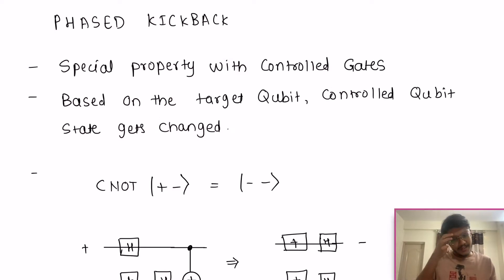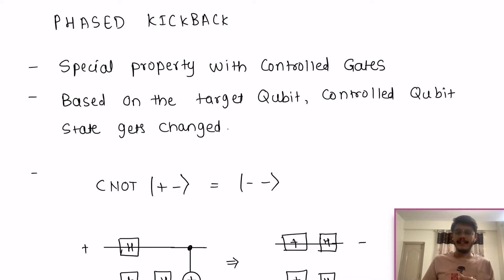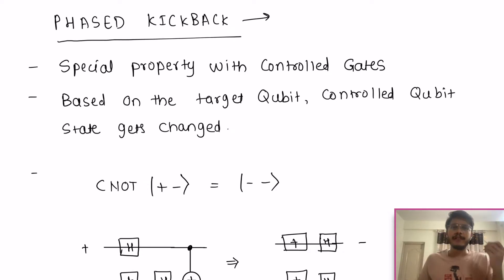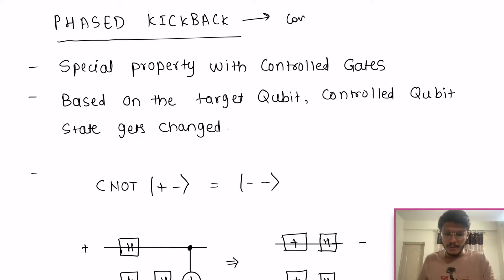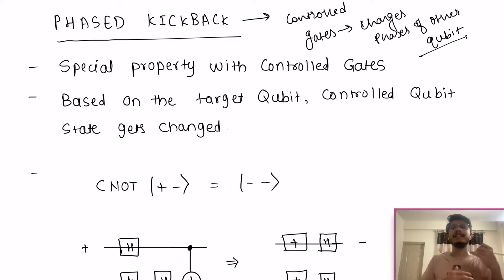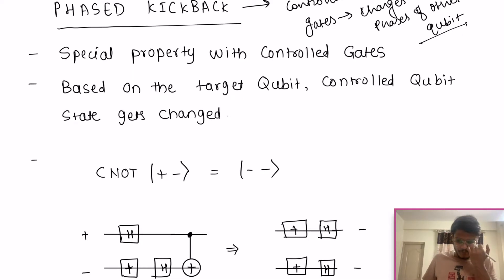Let's get started with phase kickback. What is it? It is a special property with control gates. What this name signifies is you can basically transform the phases of quantum bits or qubits in the reverse order. So phase kickback means you are reversing the phases in some manner — control gates affect the other qubit, but this phenomenon is the reverse of that.